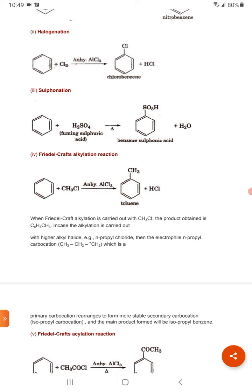First, when benzene is reacted with chlorine then chlorobenzene is formed and the formula will be C6H5Cl in presence of anhydrous AlCl3.